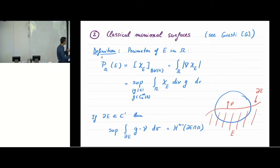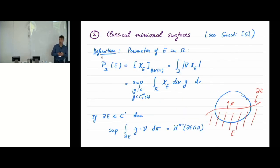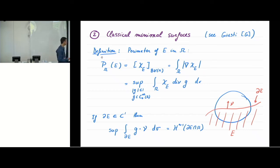We want to talk about non-local minimal surfaces — minimizers of the H^(S/2) norm. But before we do that, I want to say a few things about classical minimal surfaces, to know what to expect in the non-local setting. There is a very rich theory about classical minimal surfaces; one of the best references is the book of Giusti.